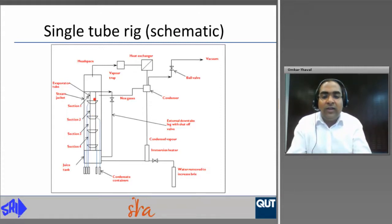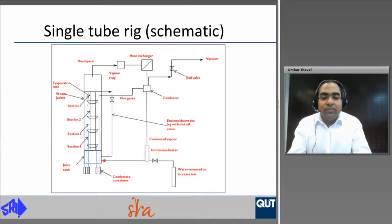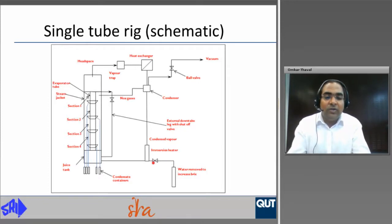A fifth condensate container collects condensate that condenses on the inner walls of the steam jacket, which plays no role in tube heat transfer. Juice boiling inside the tube produces vapours in the headspace, which are taken to a vapour trap to remove entrained juice, then into a heat exchanger where they are condensed and returned to the juice tank. Before being added back, the condensed vapour passes through an immersion heater to maintain the juice tank at boiling temperature. A connection was added to remove excess water to increase brix, and an external downtake leg with a shutoff valve acts as a downcomer during operation. A noncondensable gas line is connected to the vacuum.